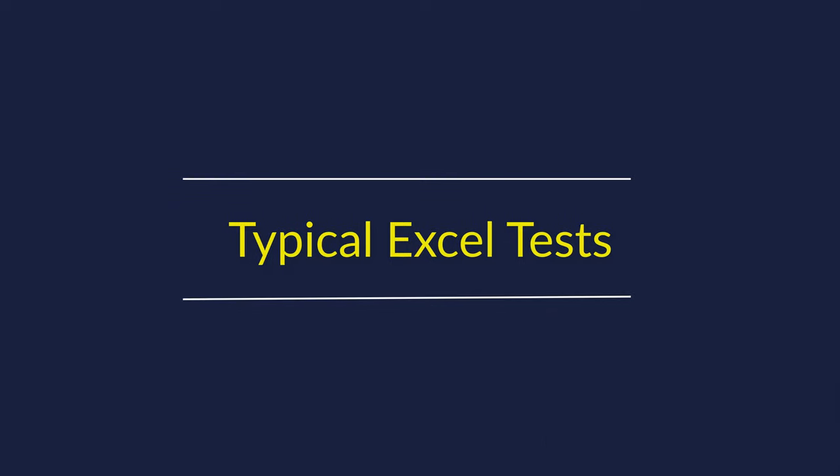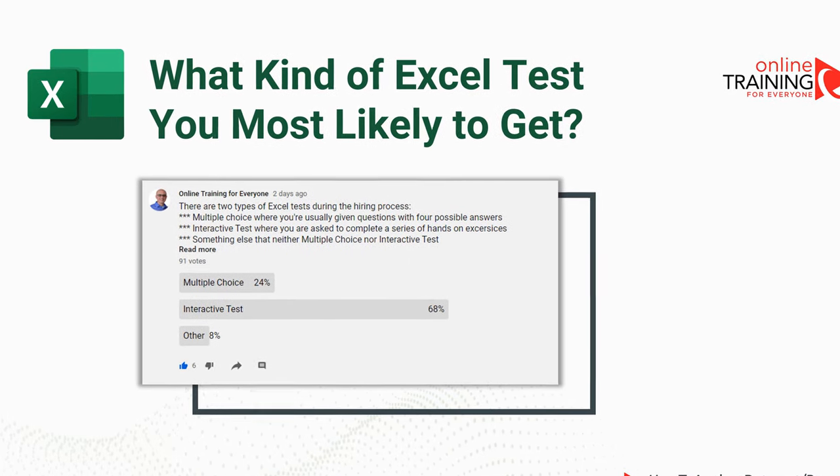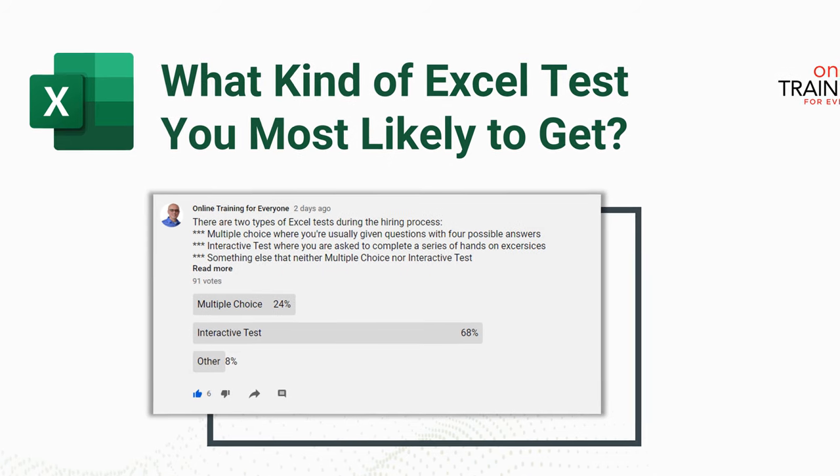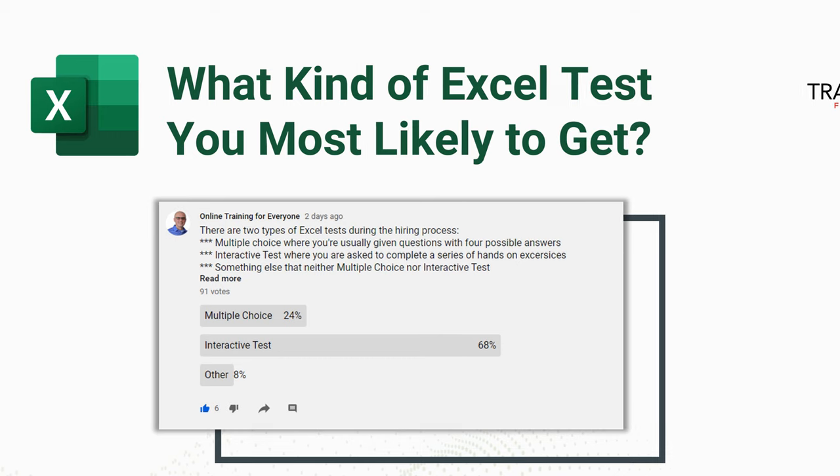Let's look at the typical Excel tests you get as part of the hiring process. There are multiple types: one is multiple choice, where you're given questions with typically three, four, or five possible answers depending on the test provider. Another is the interactive test, where you get an Excel application with a series of steps to complete. We conducted a survey on our channel — most of the time you will get interactive tests (68%), multiple choice tests 24% of the time, and other possibilities accounting for 8%.